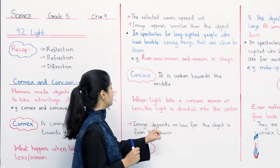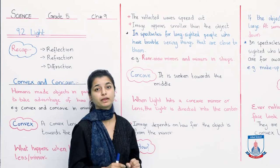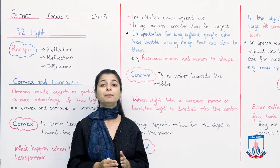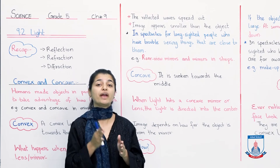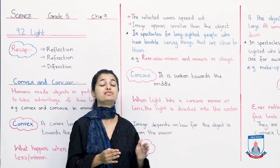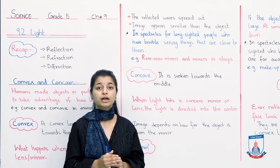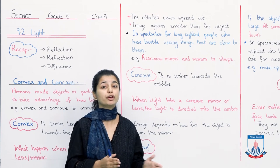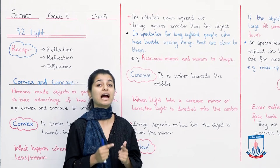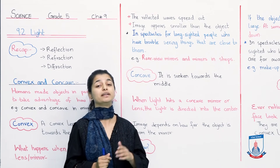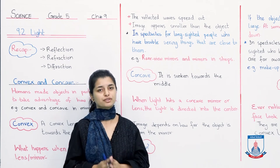The image depends on how far the object is from the mirror. Now, this is interesting. This is not that the image is always smaller than the object. It will vary. The object's distance from the light source matters. So if it is far, the image is different, and if it is near, the image is different. And now let's go to the next board to see how exactly the image differs.